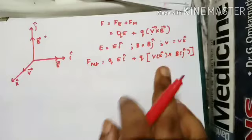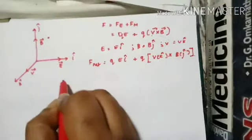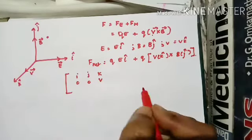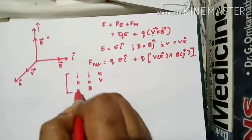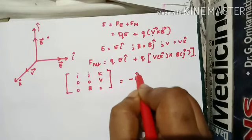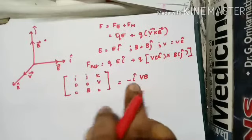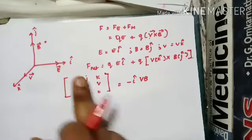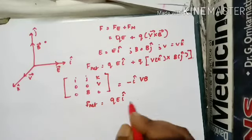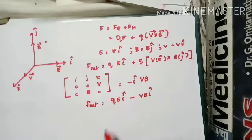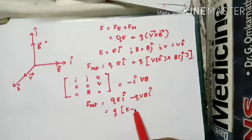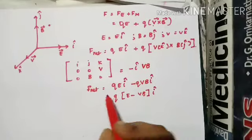Now computing the cross product V×B using the determinant method with î, ĵ, k̂: V has only a k̂ component, so the row is [0, 0, V]; B has only a ĵ component, so the row is [0, B, 0]. Working this out, you get −Vb·î. So the net force becomes F_net = Q·Eî + Q·(−VB·î), which simplifies to F_net = Q(E − VB)î. That is the net force.